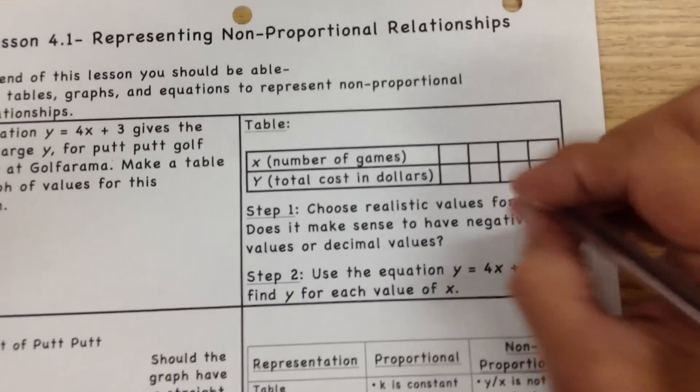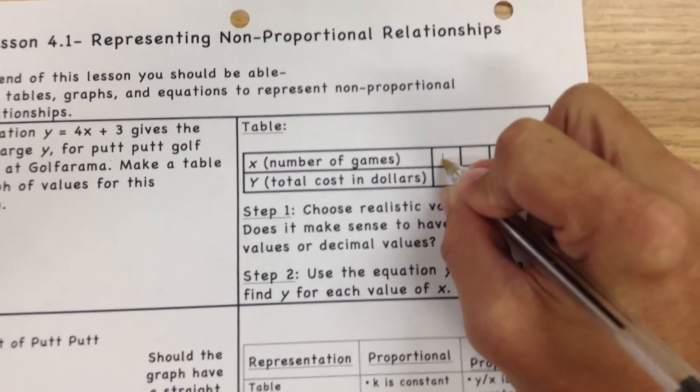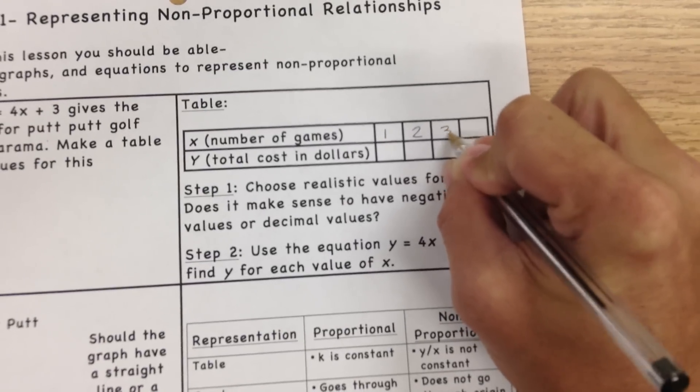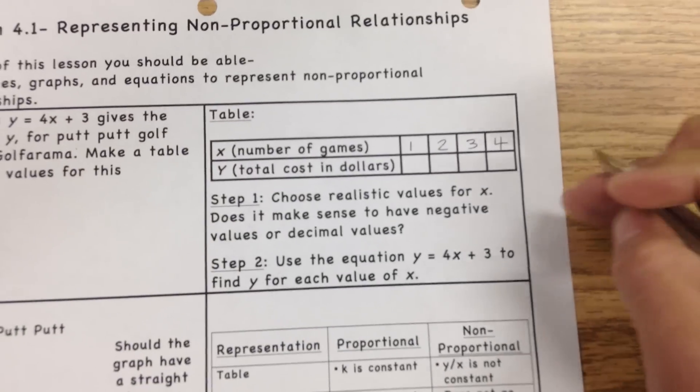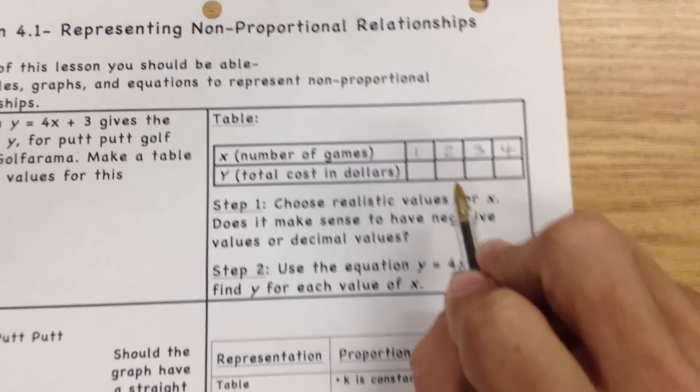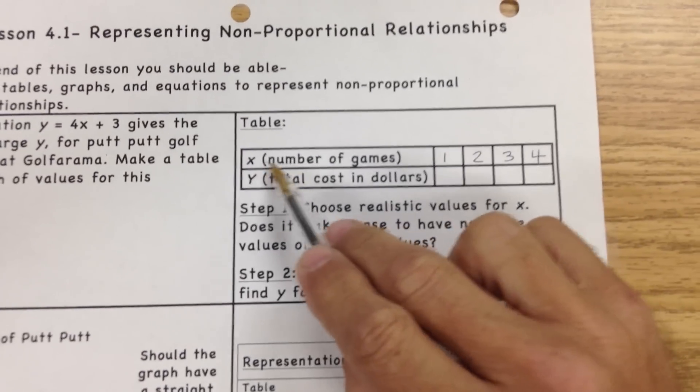Now let's come over here, we're going to fill in some numbers. So we're going to say 1, 2, 3, and 4. Nice easy numbers, and this is the representation of the number of games played, and this is our x.